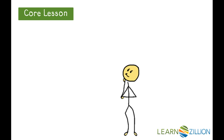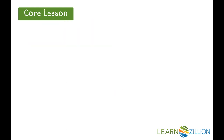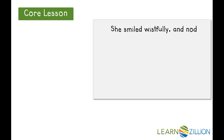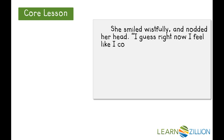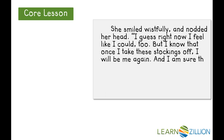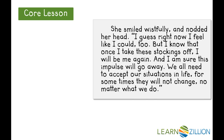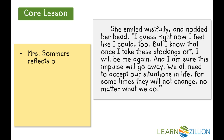My first step is to reread my draft and think: where is my character reflecting on past events? I think the part of the story where Mrs. Summers is reflecting upon the theme would be perfect. Here it is: "She smiled wistfully and nodded her head. I guess right now I feel like I could too. But I know that once I take these stockings off, I will be me again. And I am sure this impulse will go away. We all need to accept our situations in life, for sometimes they will not change, no matter what we do." I think I found it — this would be a great place to add a sentence in the conditional mood.